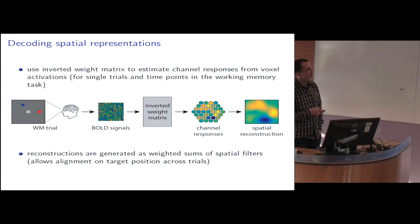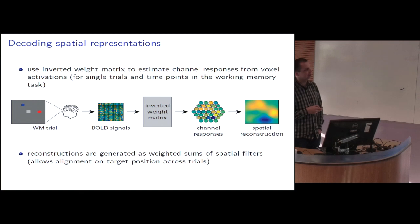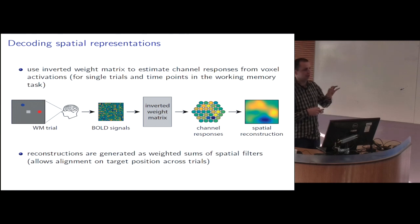The weight matrix is computed over all trials so that it captures the contributions of each channel to the voxel responses across all possible stimulus locations. You can then use the inverted weight matrix to reconstruct the spatial channels from a single trial in the working memory task at a single point in time. You get the BOLD signals, multiply them with the inverted weight matrix, and get the channel responses. You can then obtain a continuous spatial reconstruction of what the subject has in working memory by multiplying the channel responses with the spatial filters, and align different target stimulus locations across trials by rotating the spatial filters.